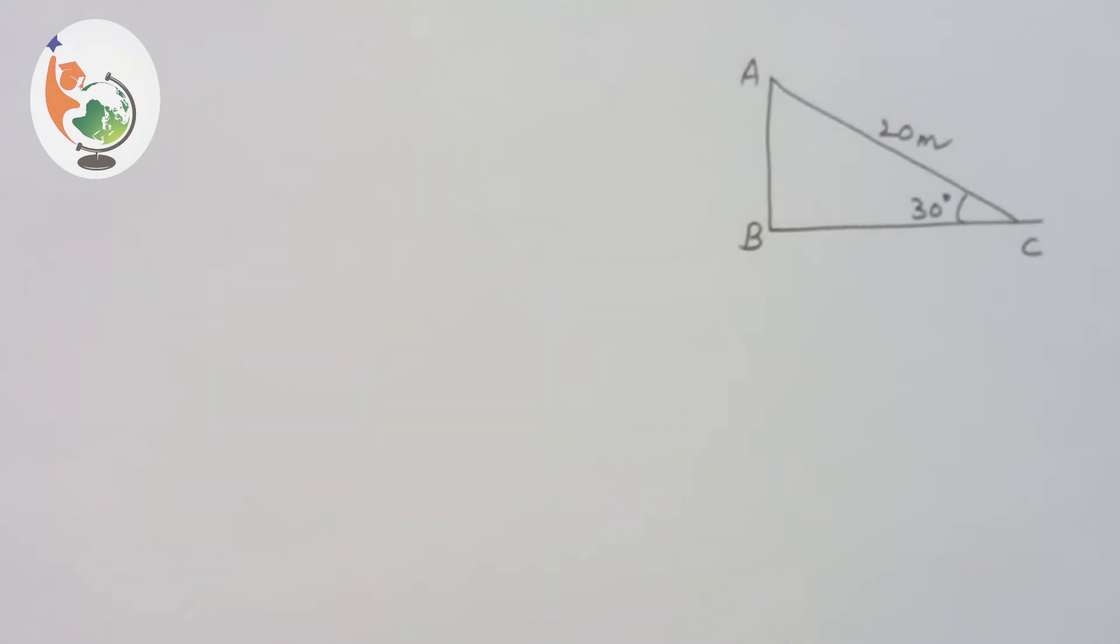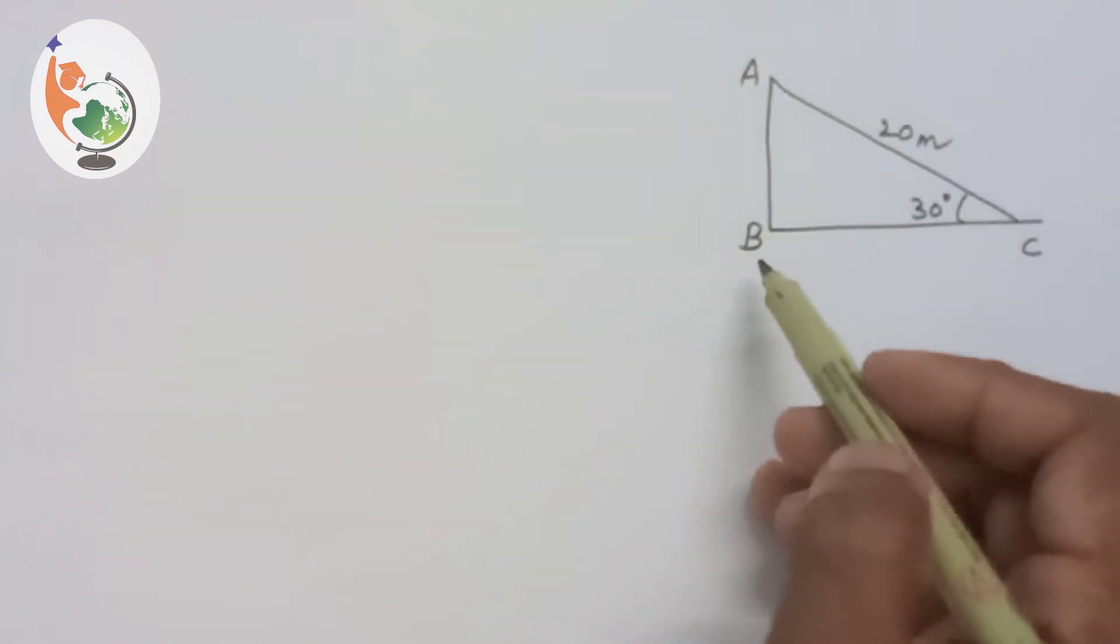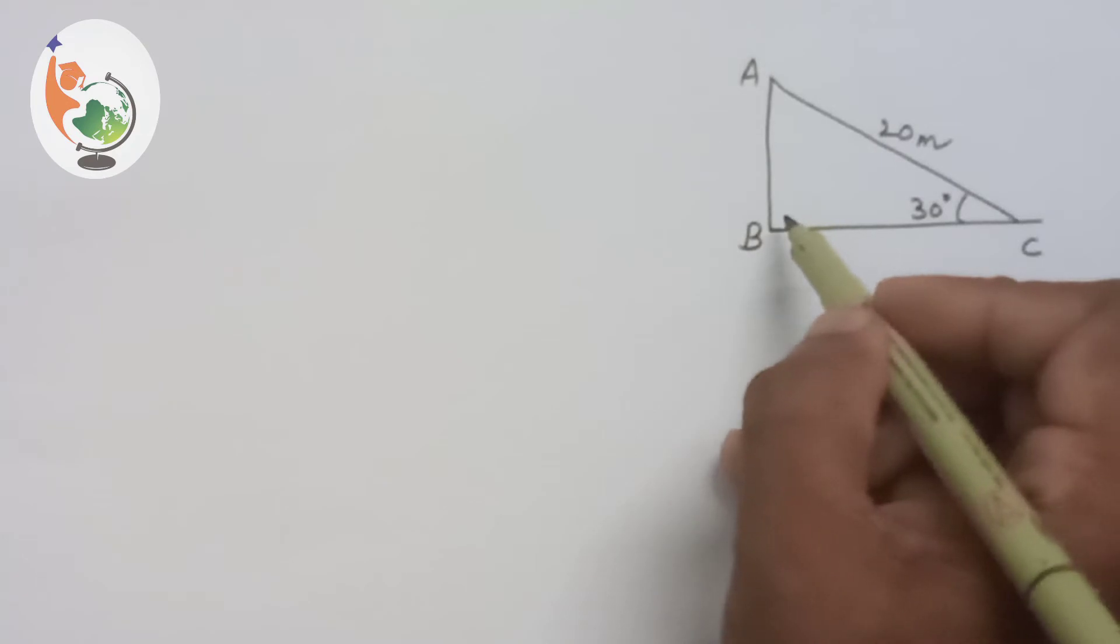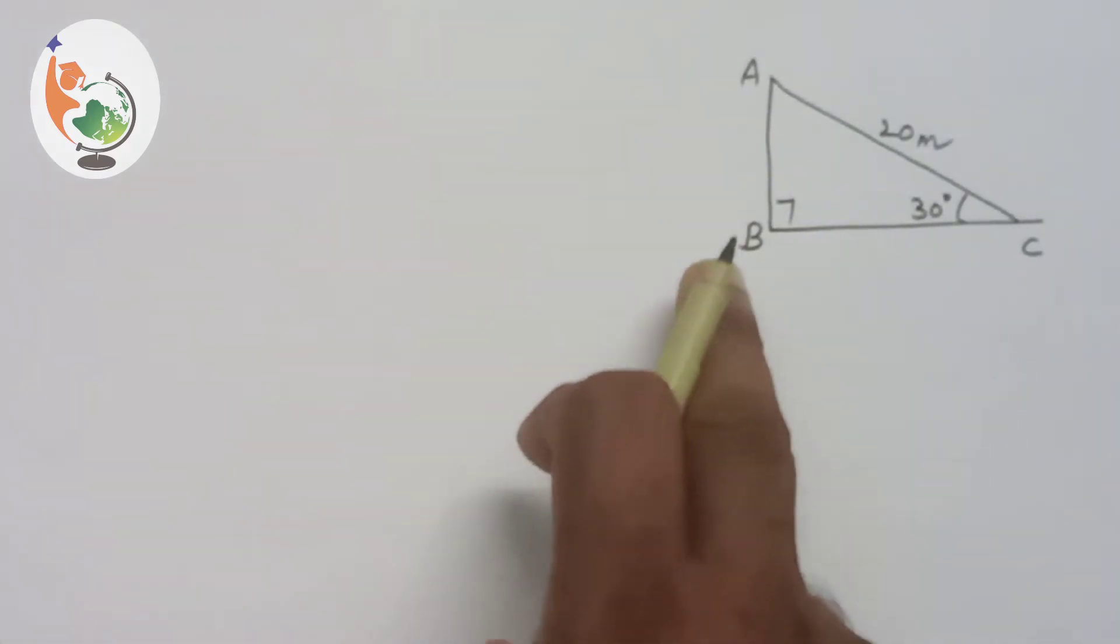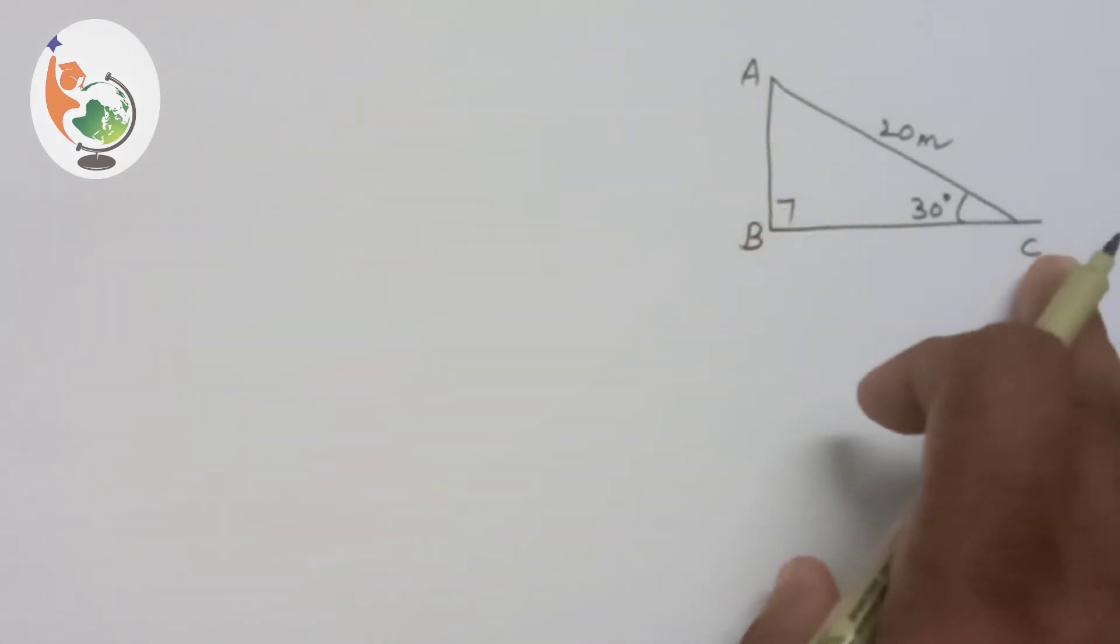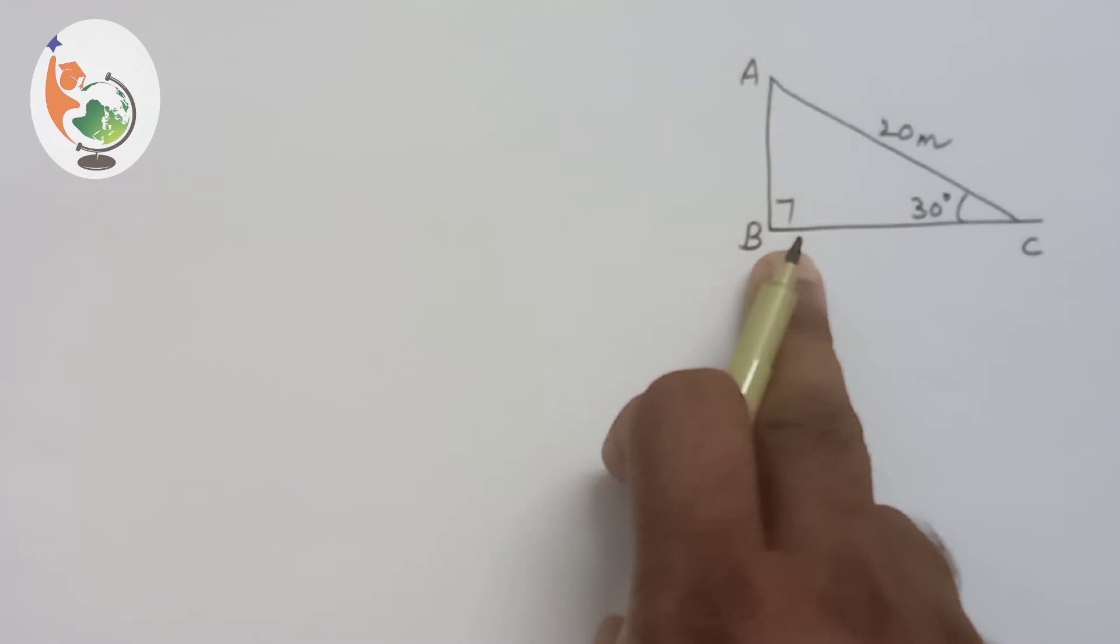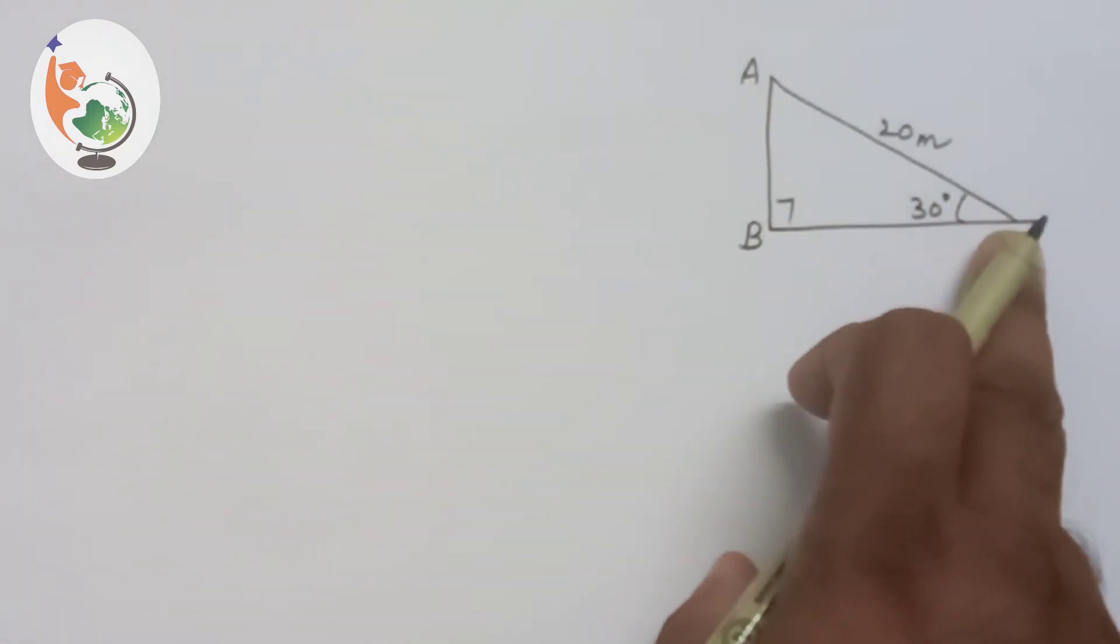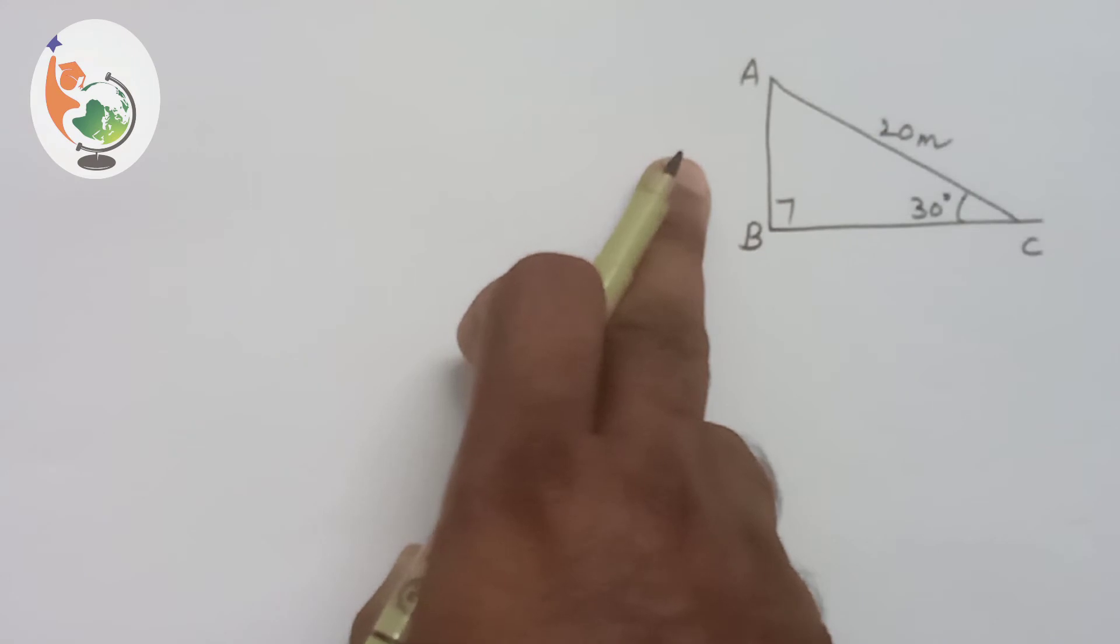We have to find the height of the pole. So in triangle ABC we can observe AB is a vertical pole, that means angle B is equal to 90 degrees. So ABC is a right angle triangle in which angle B equals 90 degrees. The hypotenuse AC is 20 meters long. The acute angle C is 30 degrees. We have to find the length of AB.